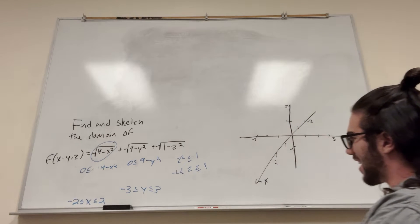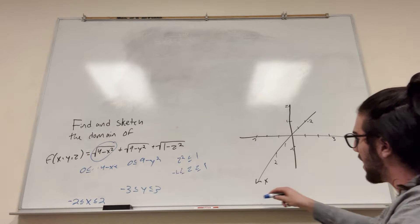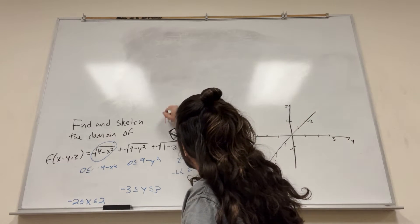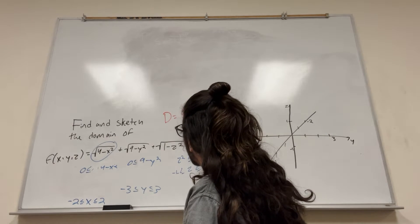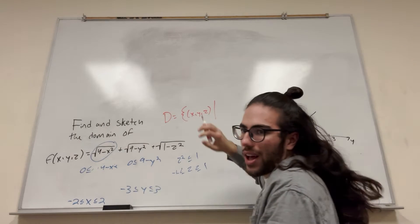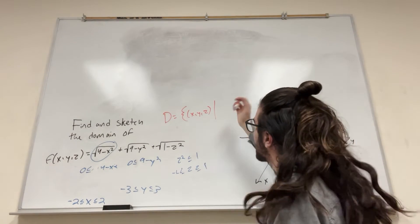So this is the domain right here. We just have to put it in domain form. Let's do that. Our domain D is equal to—use these weird brackets—x, y, z, and then a bar. I don't know why it's written like this, it just is. So write it like this.